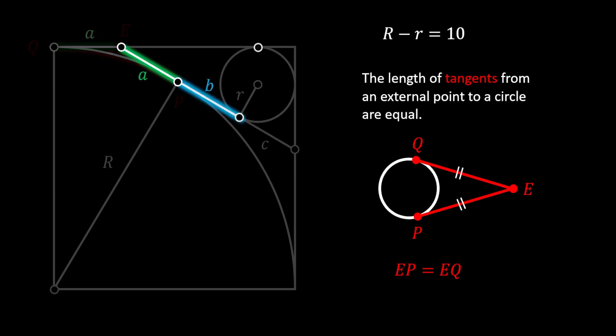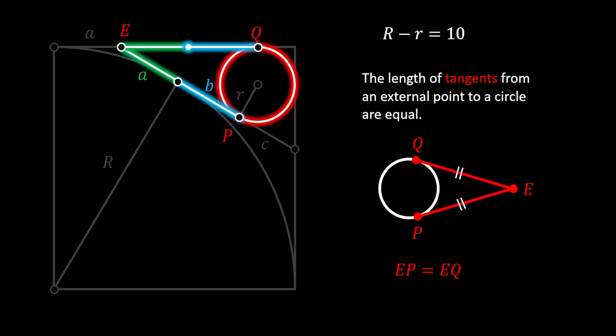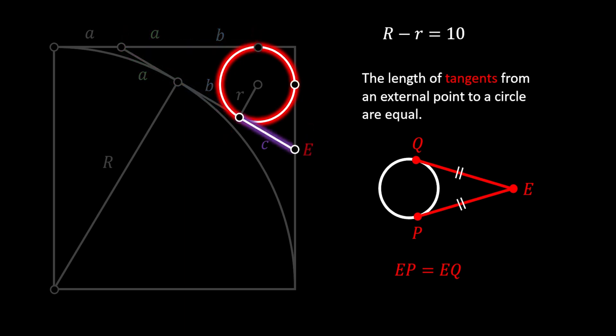Now let's do the same thing for our red circle. We will again label the external point as E and the points of tangency as P and Q. Since EP must equal EQ, EQ must also have the combined length of A plus B. Then, finding another external point and points of tangency, since EP equals EQ, EQ must have the value of C in this case.